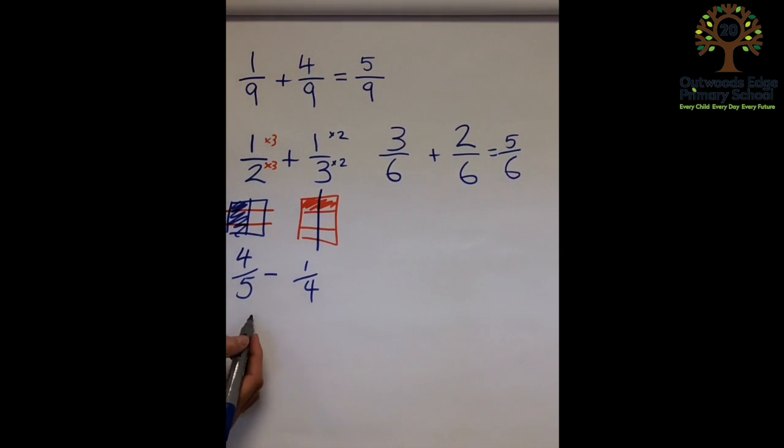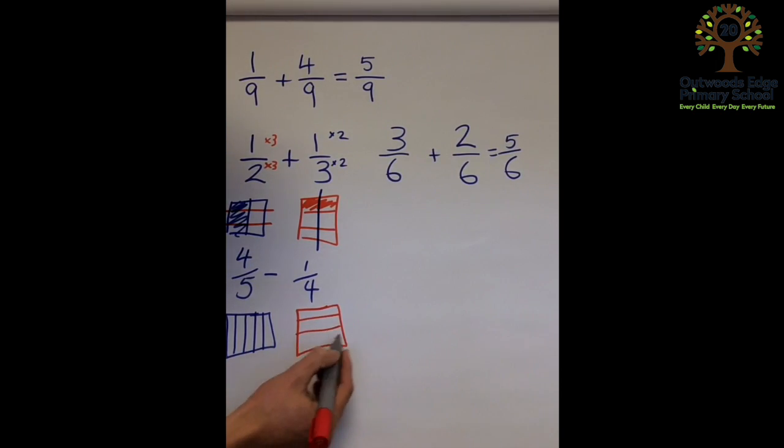On this side, I'm going to draw my fifths. And on this side, working in the opposite direction, I'm going to draw my quarters, and I'll shade that in, and I'll shade that in.